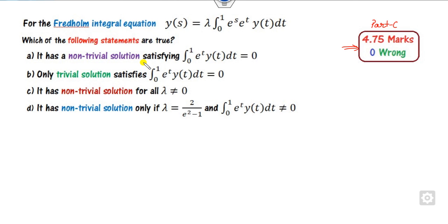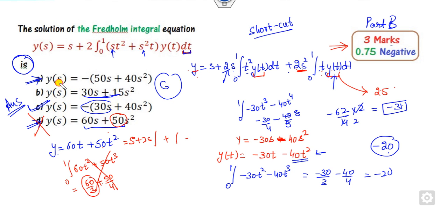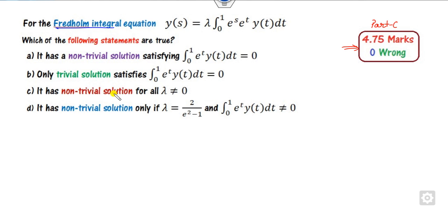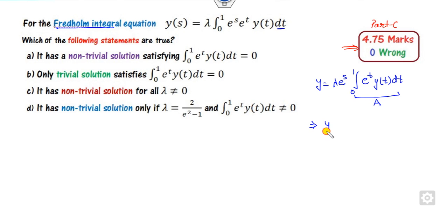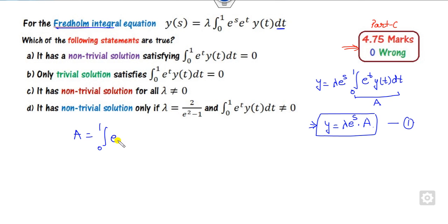Now look at the next question — again a Fredholm integral equation, but here they are not asking about the solution as in the previous case. y(s) is given and you have to make a decision on trivial and non-trivial solutions. This is again integration with respect to t, so we can take s as a constant. e^s is factored outside. Now consider the integral value as a constant 'a'.